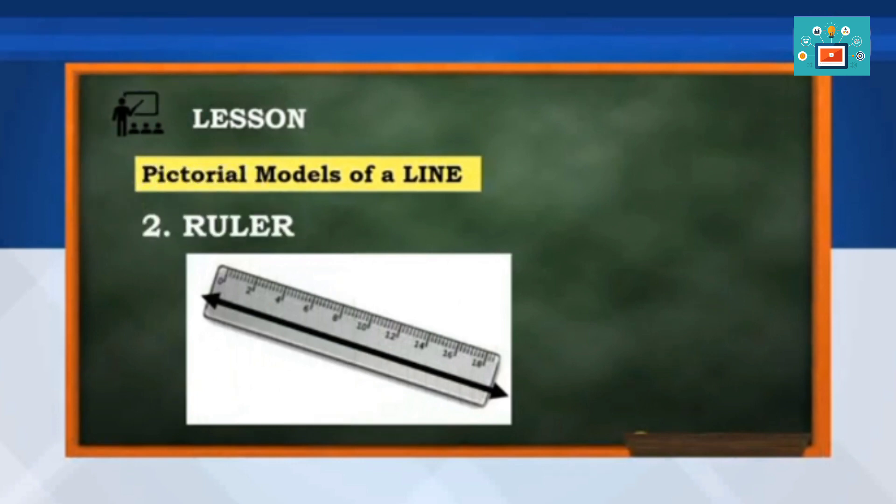We can also have ruler. Given the name of two points, we can name the line as line AD or line BA.